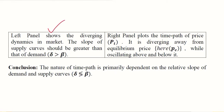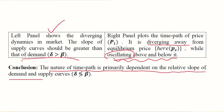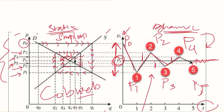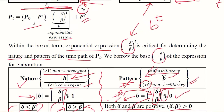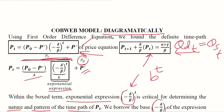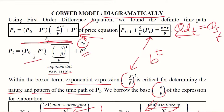The summary of the static side can be read by pausing the video, and the dynamic side shows oscillation diverging away from the equilibrium price. The conclusion is that the nature of the time path depends primarily on the relative slopes of the demand and supply curves. In the next video we will consider the third case. This was the diagrammatical development of the cobweb model, explaining why we call it the cobweb model — due to its spider-web-like appearance.